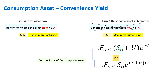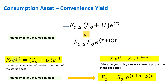You can already start thinking about why. The reason is the convenience yield — I'm going to show it to you shortly. When you calculate the futures price of a consumption asset based on this formula, the actual futures price in the market will be less than what you get using this formula, and the reason is the convenience yield. As you can see here, once you factor in the convenience yield, there is an equality.